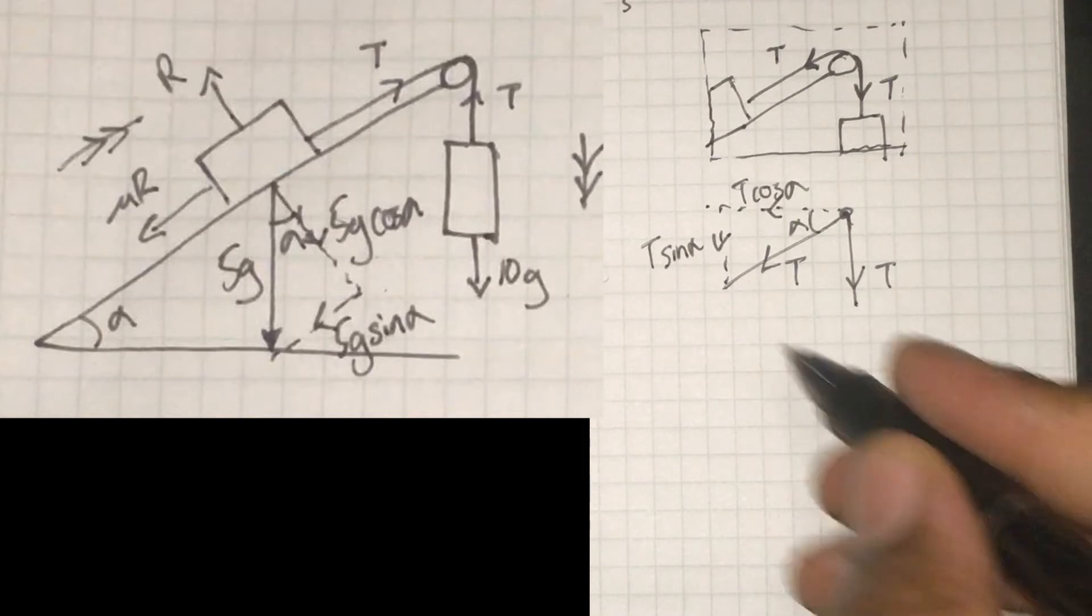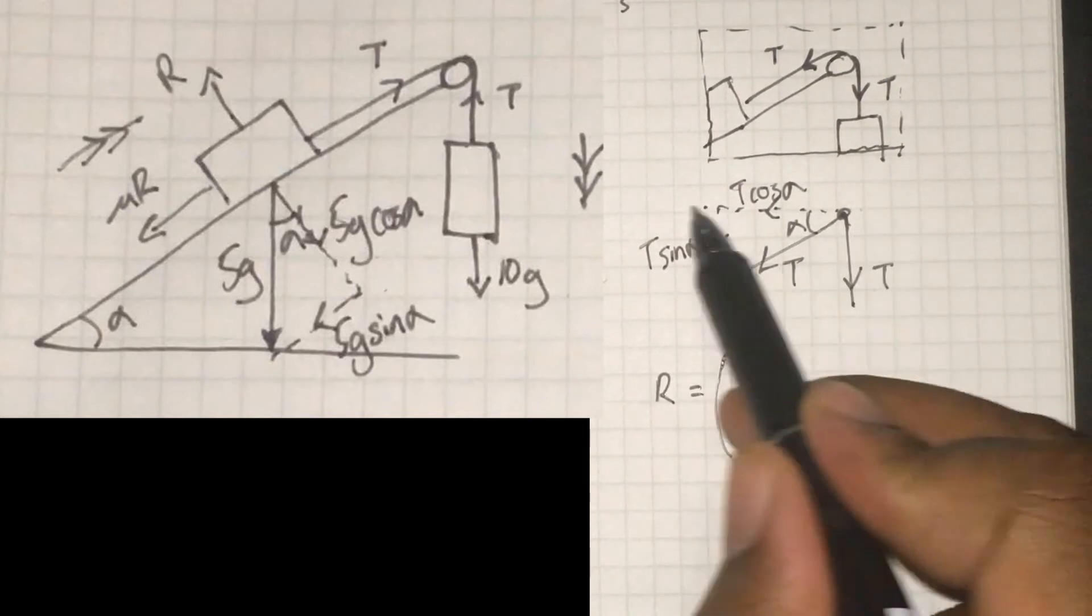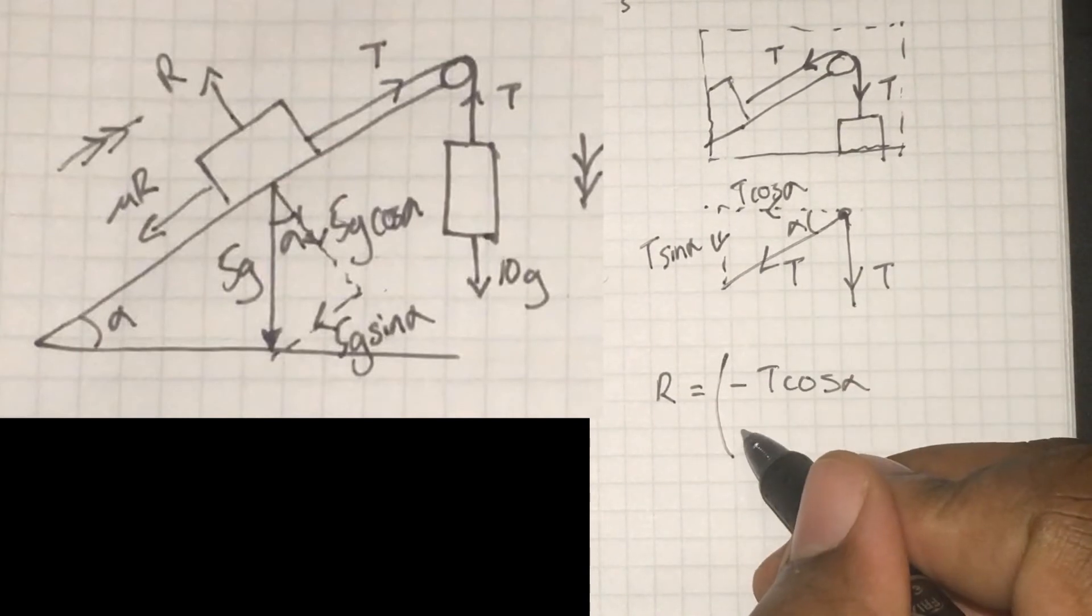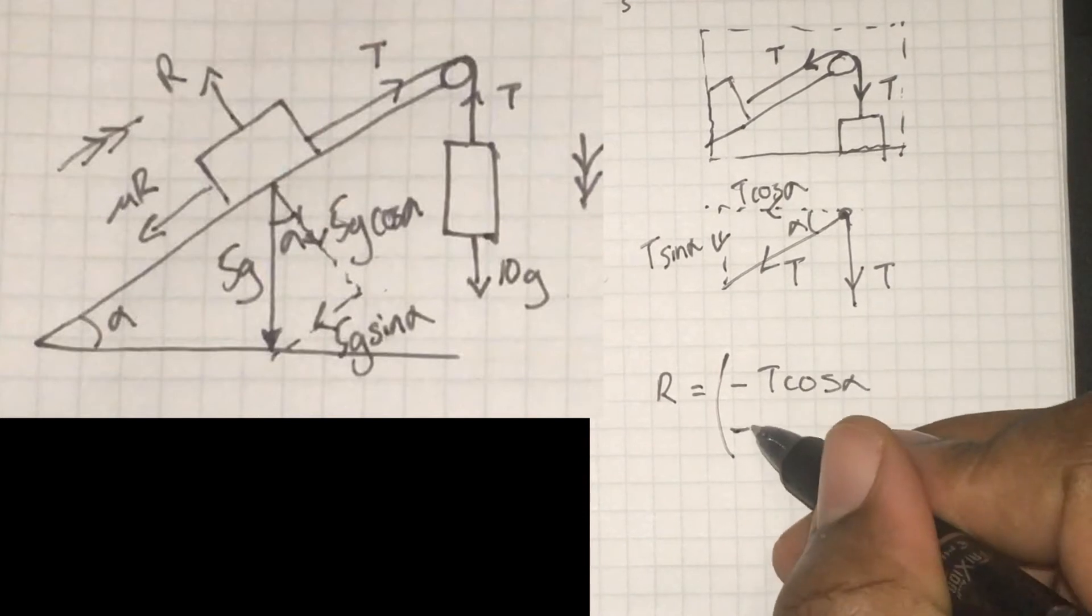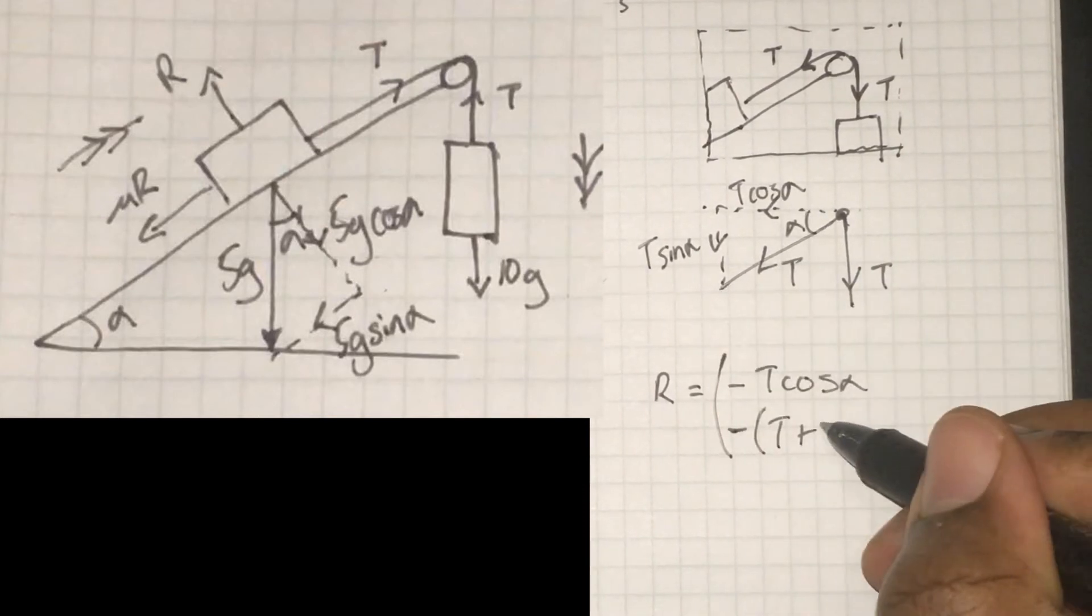And from there, we should now be able to generate a resultant force that is acting on the pulley. So horizontally, we're moving to the left by T cosine alpha. And vertically, we're moving down with T sine alpha and T.